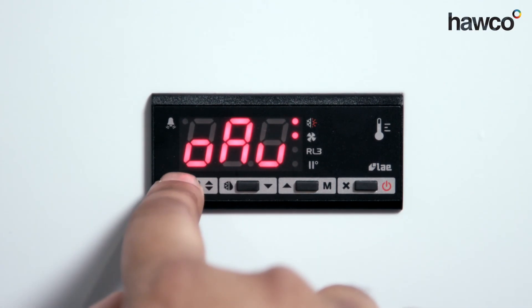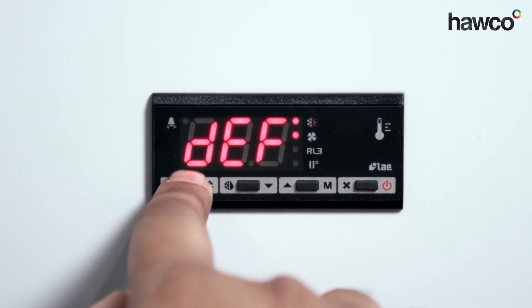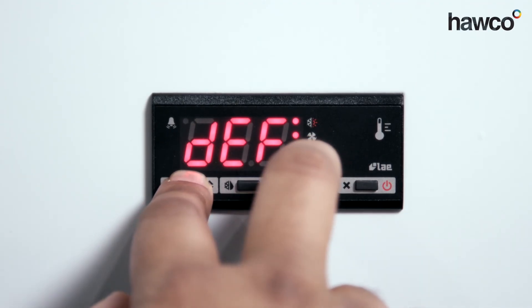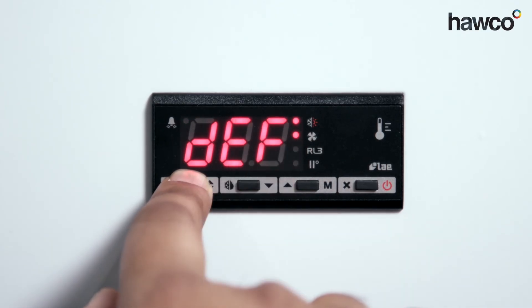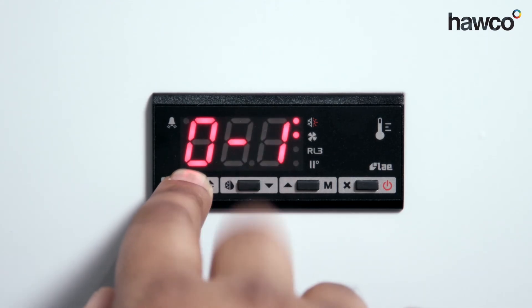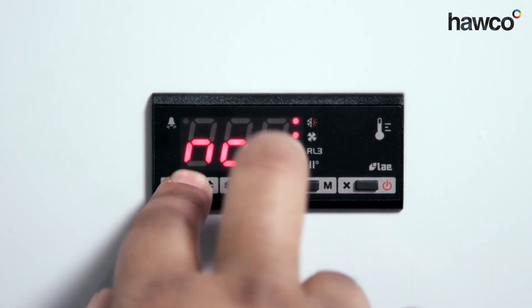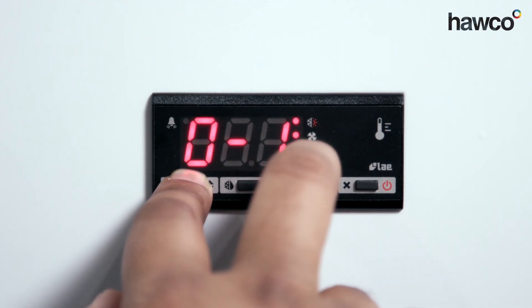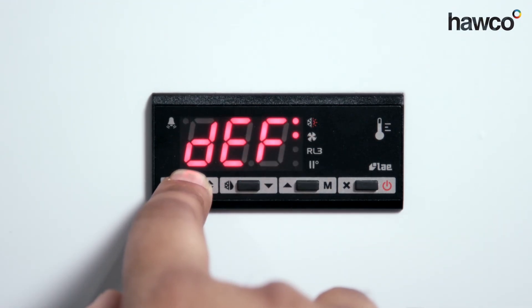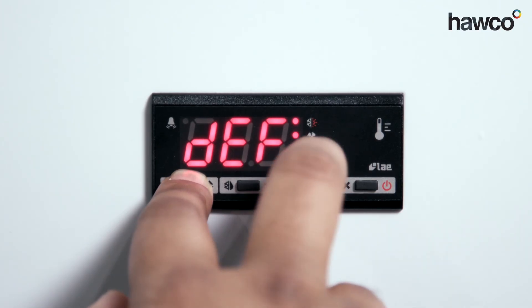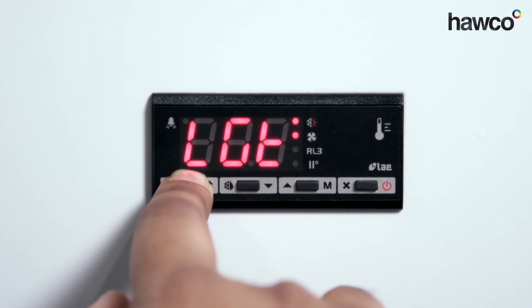OAU is the auxiliary relay. We're going to set this to defrost. You can either have it as a light, as an alarm, or an alarm for high temp. Other options are zero to one volt or non-functioning. I'm going to set it to defrost, which means all the previous defrost functions we've set up will now engage. If you choose a different function, the previous defrost parameters we've set up will not be used.